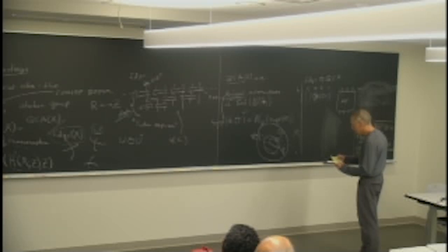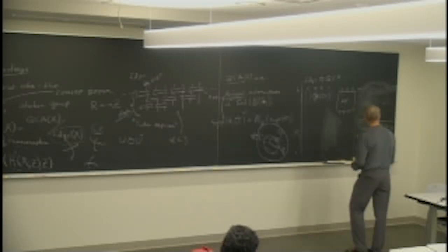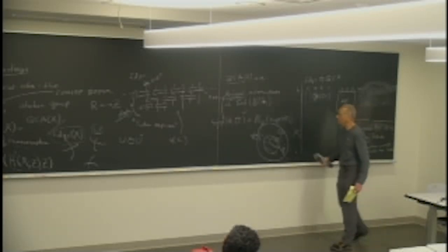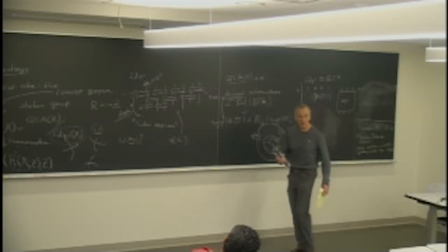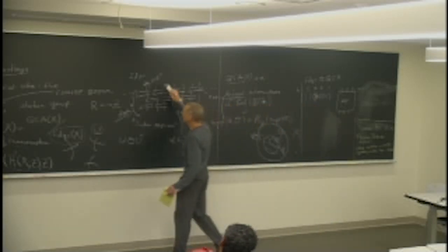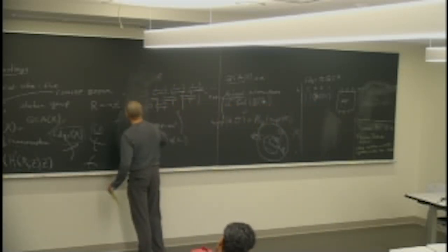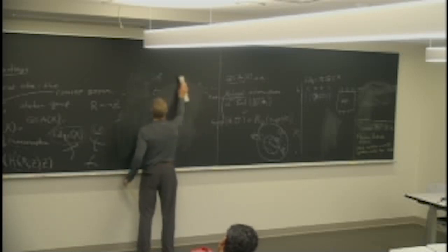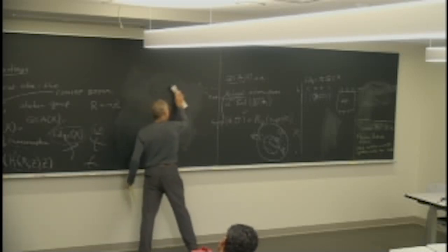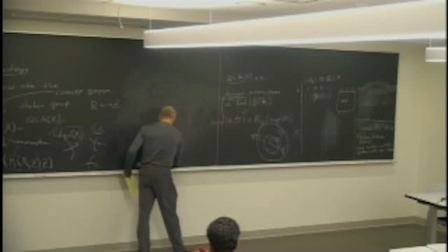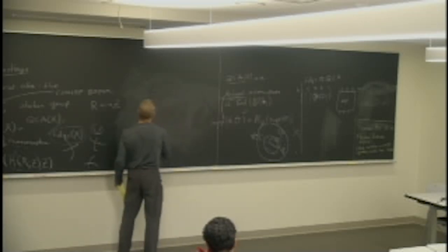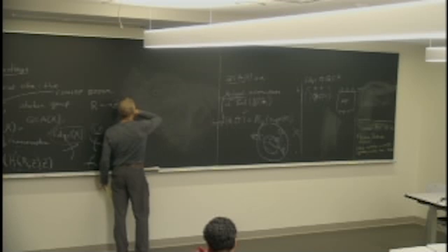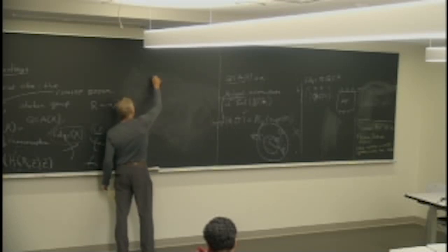Now we're warmed up to the first exciting result. All this has sort of been definitional. The first thing that's exciting is that the group Q(X) is abelian — this was the big surprise that we discovered.